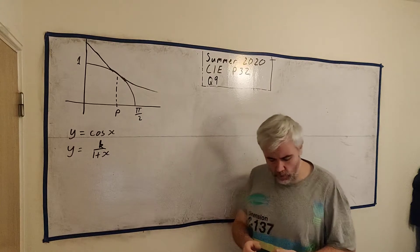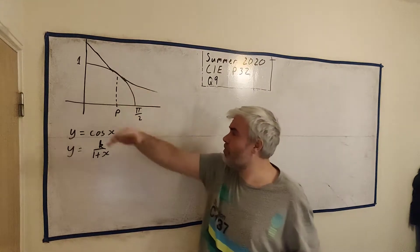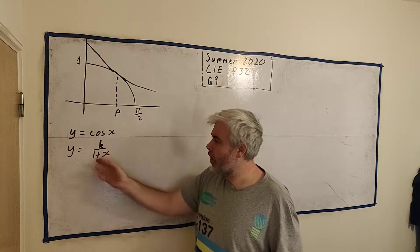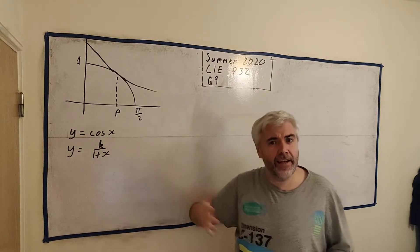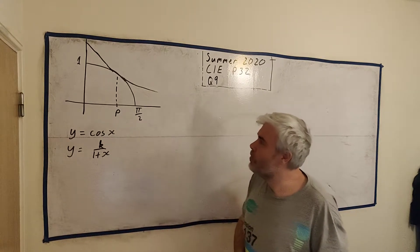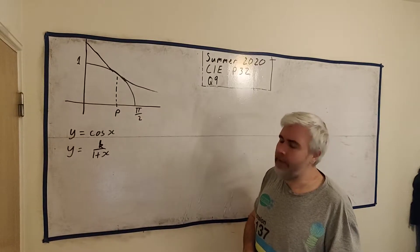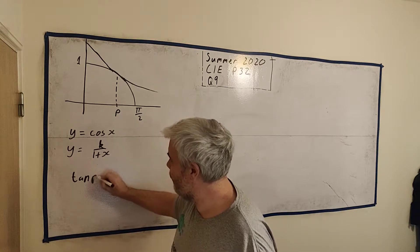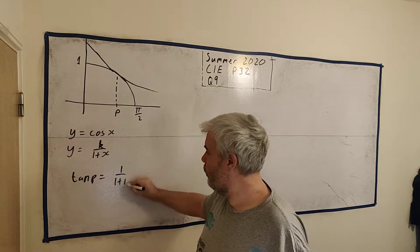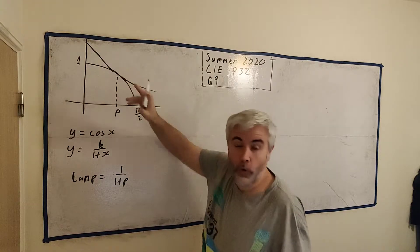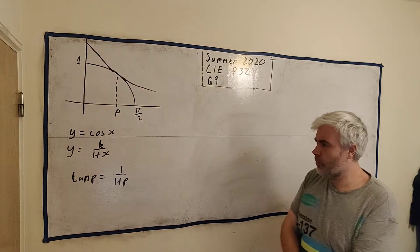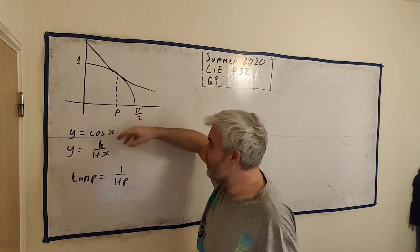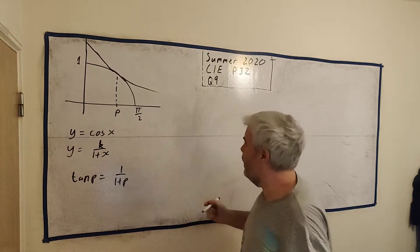This is a really tricky question to start. We have here the two curves they gave us: y equals cosine x and y equals k over 1 plus x. We're going to find k later in the question, it's just some constant, some number we don't know yet. They ask us to discover that the tangent of p is equal to 1 over 1 plus p. Now p is the point where they touch each other. Most students started by putting p in. We know p is where they intersect so let's put x equal to p.